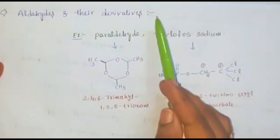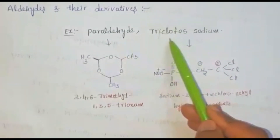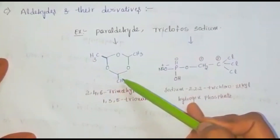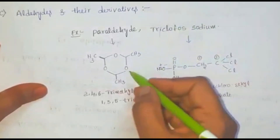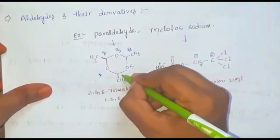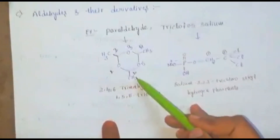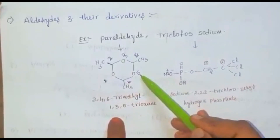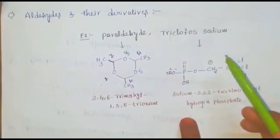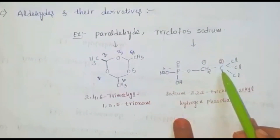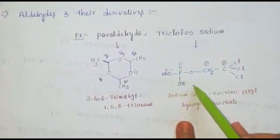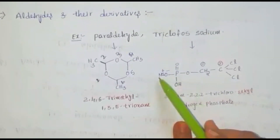The last subclass is aldehydes and their derivatives. Examples: paraldehyde and triclofos sodium. Paraldehyde contains three methyl groups and three oxo groups; the numbering is 1 through 6, and the nomenclature is 2,4,6-trimethyl-1,3,5-trioxane. Triclofos sodium: it contains an ethyl group; the second carbon is attached with three chlorine moieties, and the first carbon is attached with a hydrogen phosphate — that is called triclofos sodium.